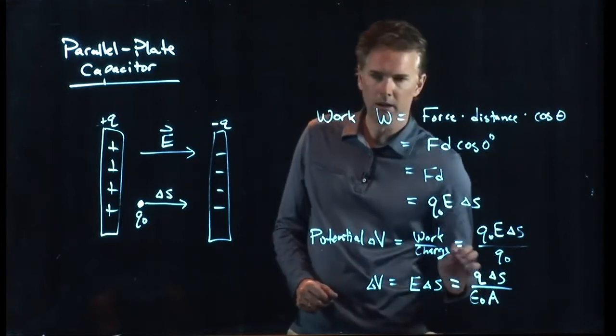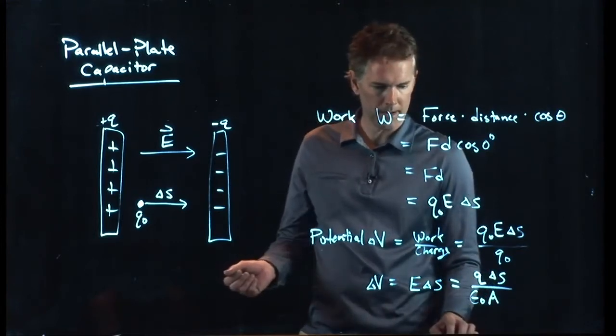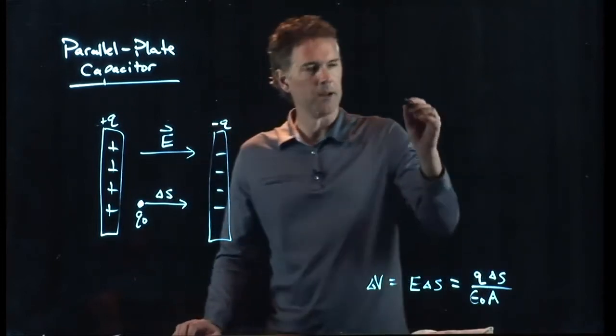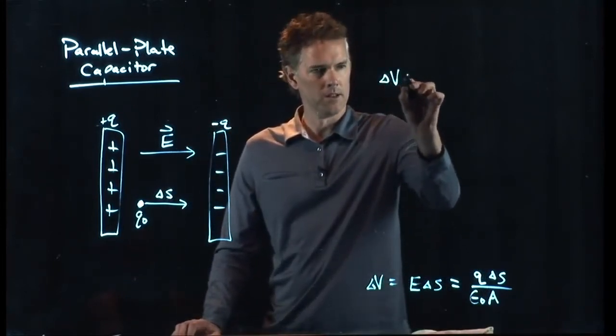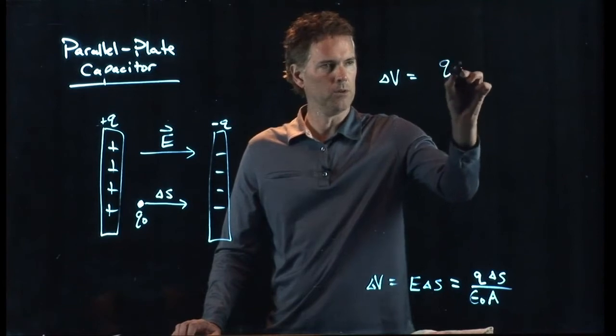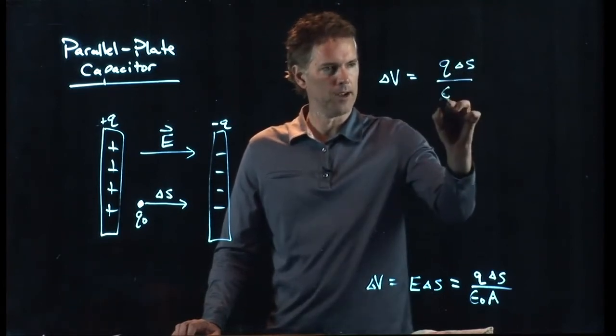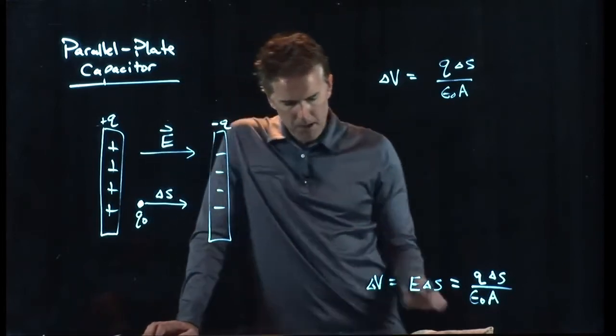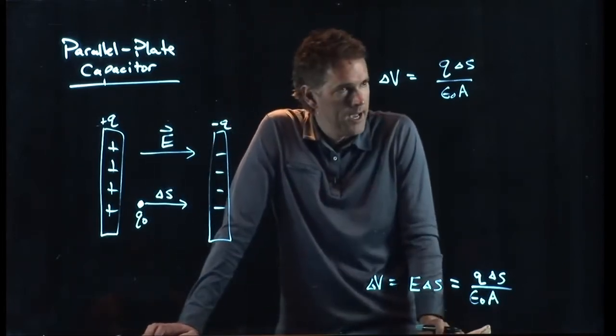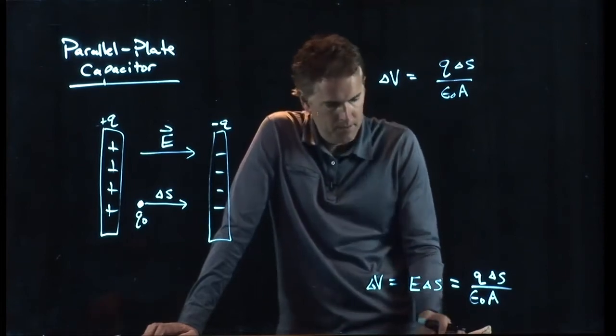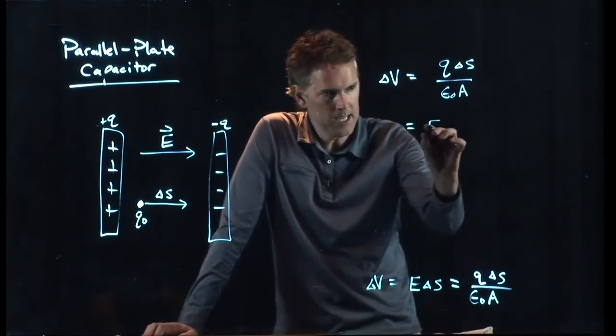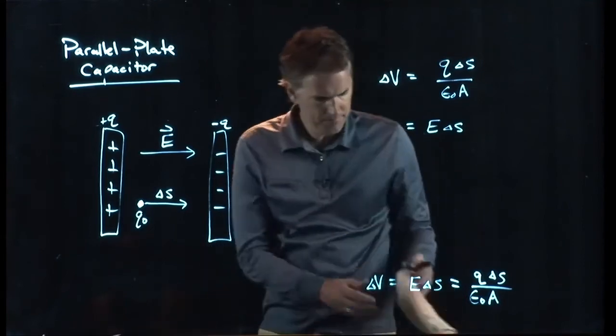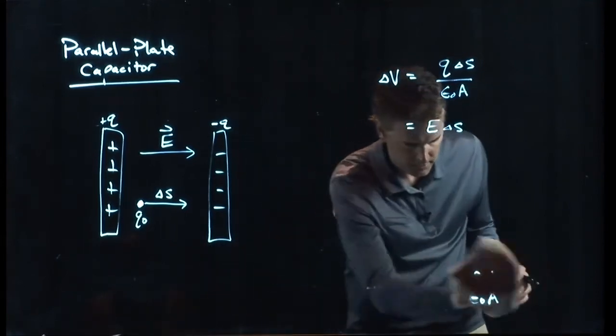All right. Let's write that up here. Delta V equals Q delta S over epsilon naught A. And I think maybe now we have everything we need. We can also write this as E delta S. So the problem, 1740, says the following.